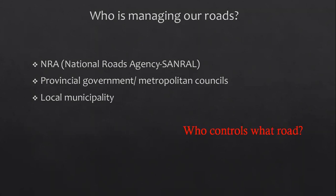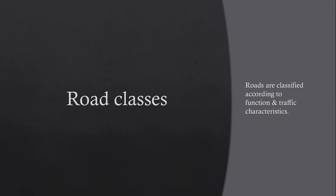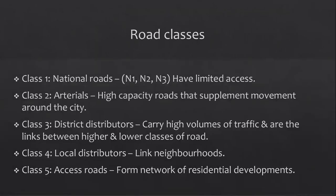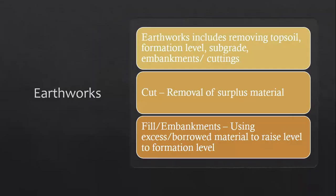Roads such as Nelson Mandela Road are examples of named roads. Road classes: roads are classified according to function and traffic characteristics. National roads are your N1, N2, N3 — they have limited access, meaning cars must use a slipway. Arterials are high-capacity roads that supplement movement around the city. District distributors carry high volumes of traffic and link higher and lower classes of road. Local distributors link neighborhoods, and access roads go into residential areas.